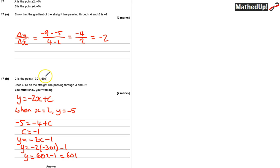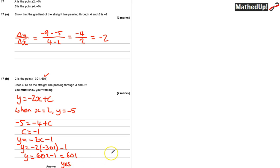We get Y equals 601, which is exactly that value, which means yes, C does lie on the line.